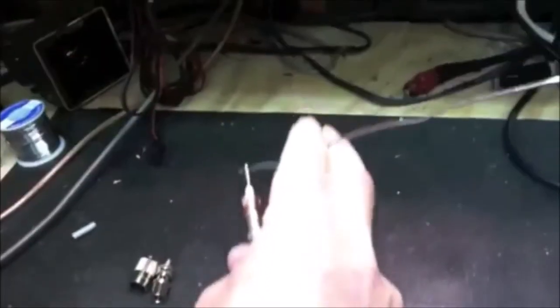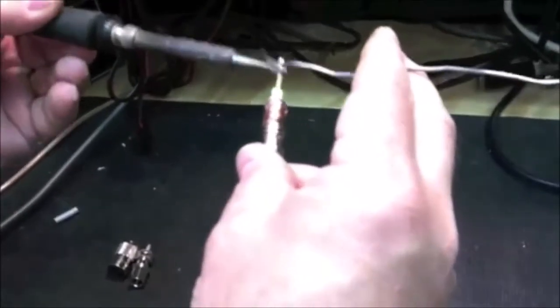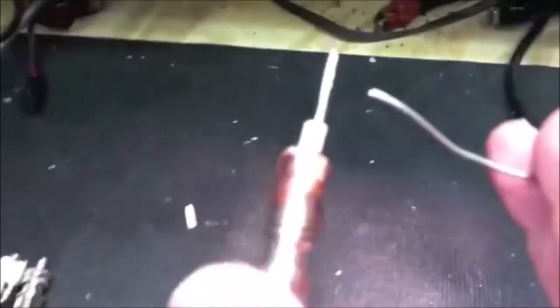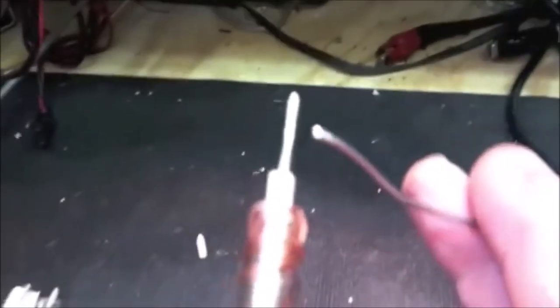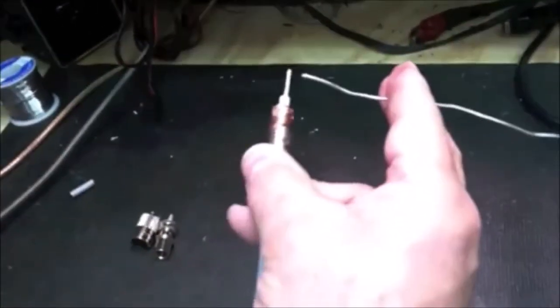Next, you will want to tin, is what it is called, the center conductor. Coating it completely with solder. You'll want to heat it until the solder flows like water.